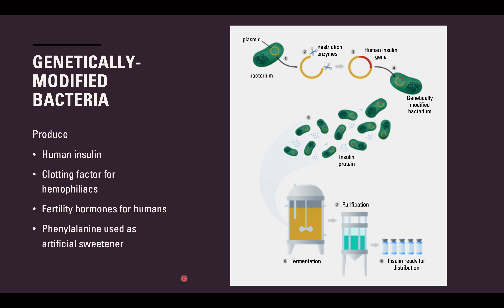We also use genetically modified bacteria for things like clotting factor for hemophiliacs who lack a natural clotting mechanism. We use it for fertility hormones for women attempting pregnancy, and even for things like artificial sweetener. Farmers also use GMOs — genetically modified organisms — to produce more drought-resistant crops that are hardy and able to last through a drought season rather than losing an entire crop. Genetically modified bacteria is used in a wide variety of scientific research today.